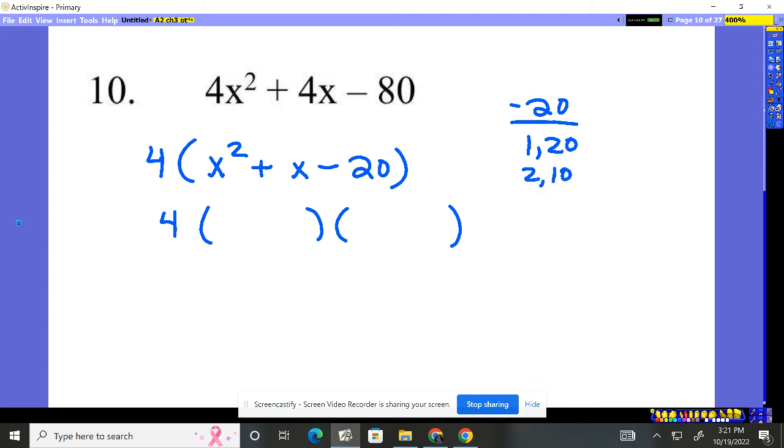1 and 20, 2 times 10, 3 times nothing, 4 times 5. Now, because one's negative and one's positive, we're not adding these together. Because one of them is negative, so we're sort of subtracting it. So we're looking for the difference between these.